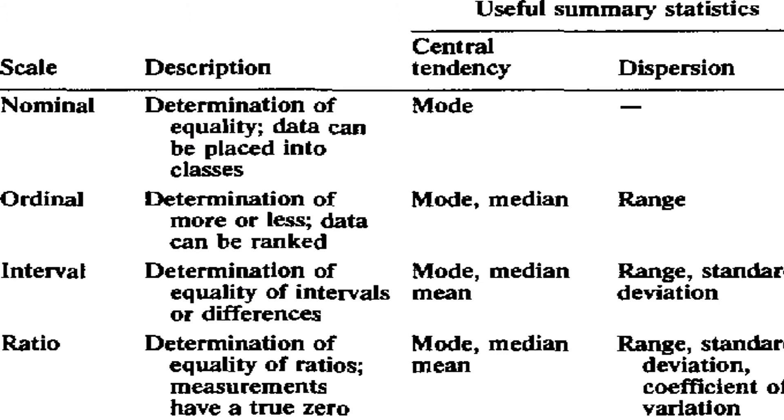And this is the summary of the information. Here in the table we can see the different types of scale, its description as well as what are the statistical treatments or analysis is possible. First of all, nominal scale - determination of equality, data can be placed into classes. So here, only central tendency or average we can find by using mode.